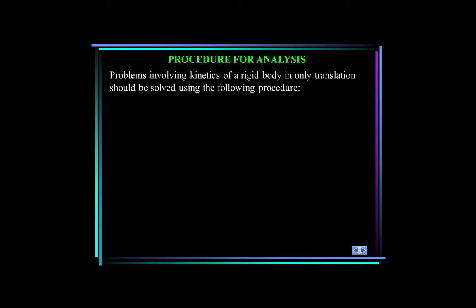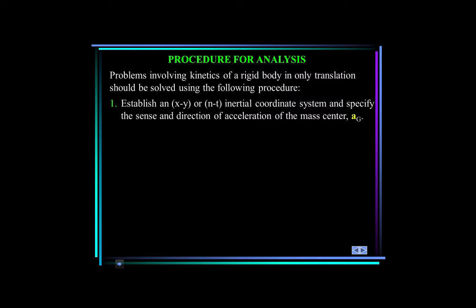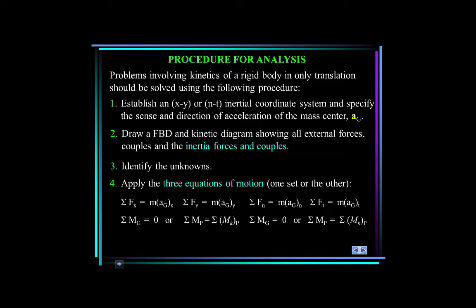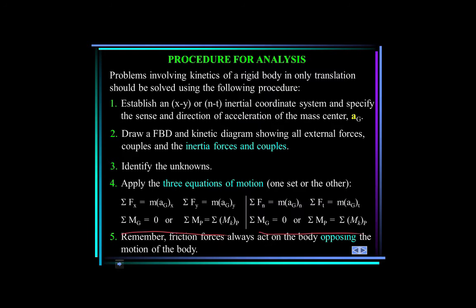Let's establish a procedure for analysis. First, establish an xy or normal-tangential inertial coordinate system and specify the sense and direction of the acceleration of the mass center a_G. Draw a free body diagram and kinetic diagram showing all external forces, couples, and inertial forces. Identify the unknowns and apply the three equations of motion. Remember, friction forces always act opposing the motion — assume a direction; if the result is negative, you assumed the wrong direction.